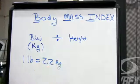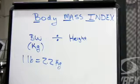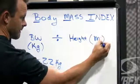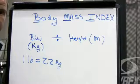That's the conversion. You're going to divide your weight in kilograms by your height in meters. If you need to convert that, one inch equals 2.54 centimeters.